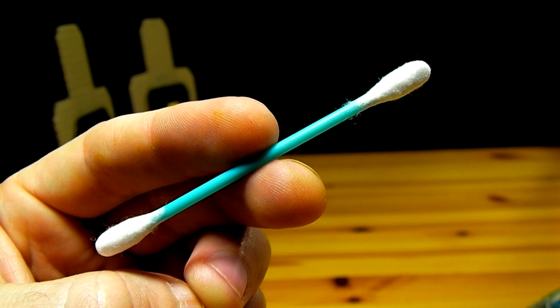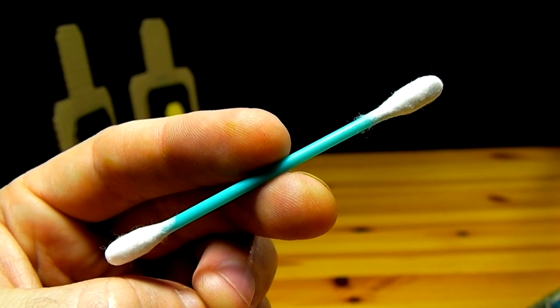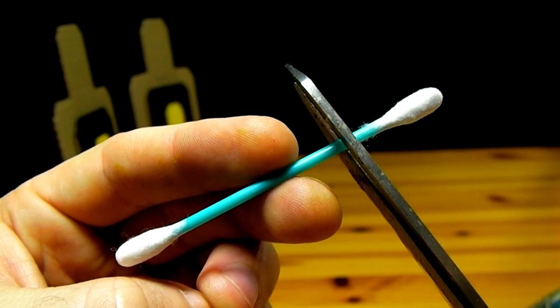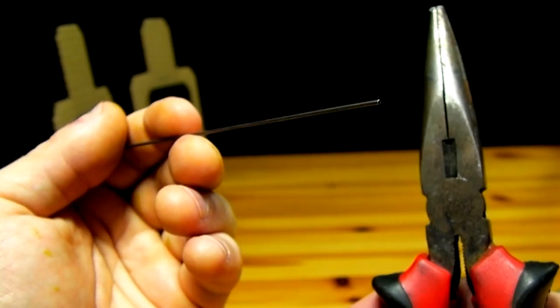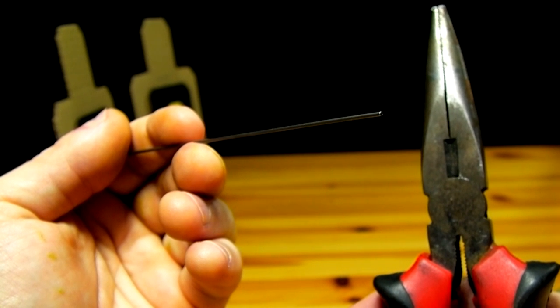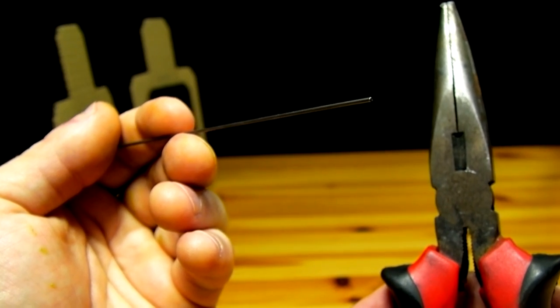The first step to making these darts is to take a plastic cotton swab and cut one of the ends off. A piece of thin musical wire, which is available at most hardware stores, is then trimmed down into 1 inch long sections.